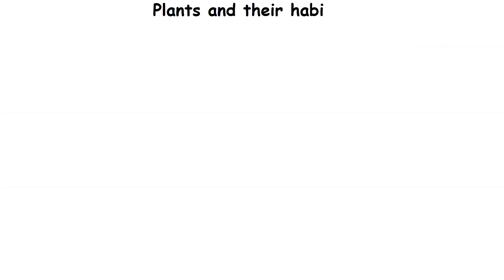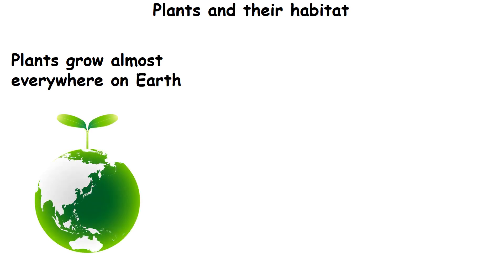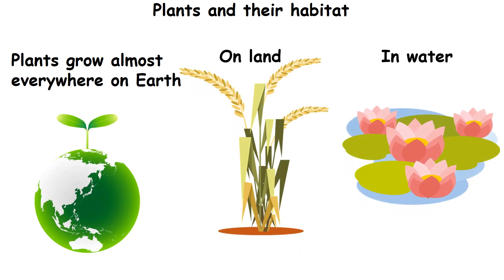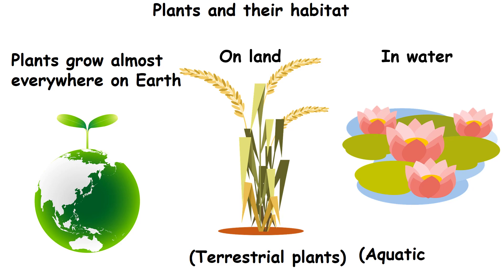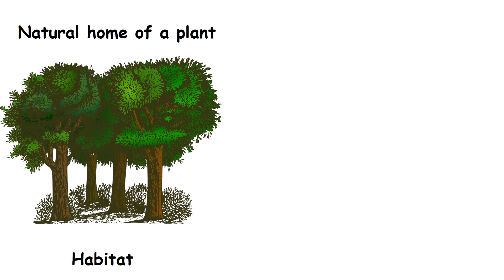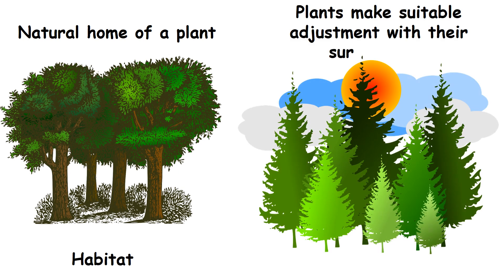Plants and their habitat. Plants grow almost everywhere on earth — on land and in water. Plants that grow on land are called terrestrial plants, and plants that grow in water are called aquatic plants. The natural home of a plant is called its habitat. Plants make suitable adjustments with their surroundings to meet their requirements. This is known as adaptation.